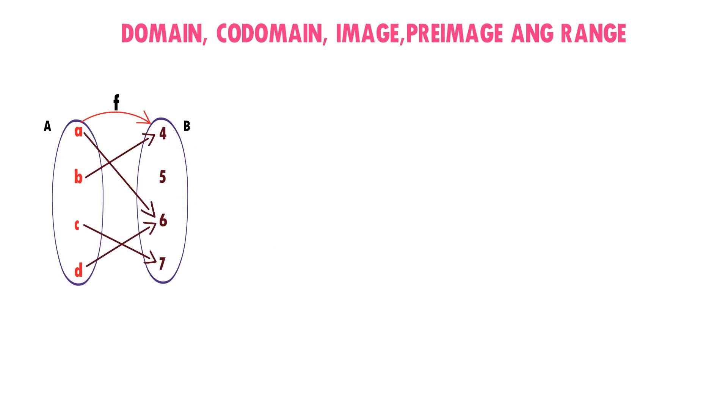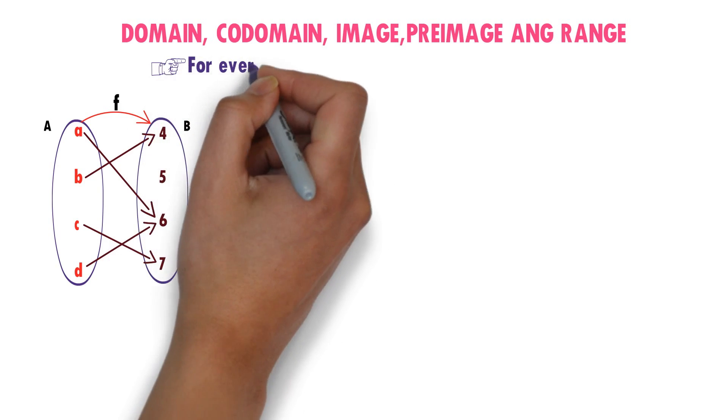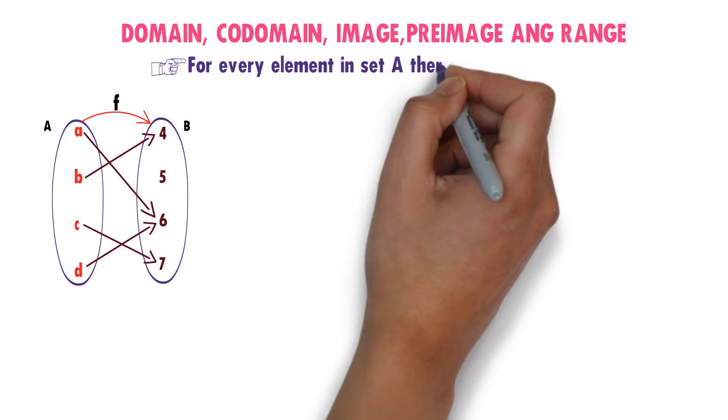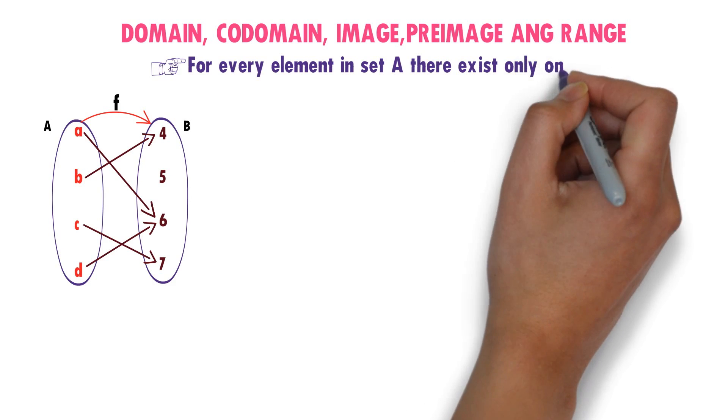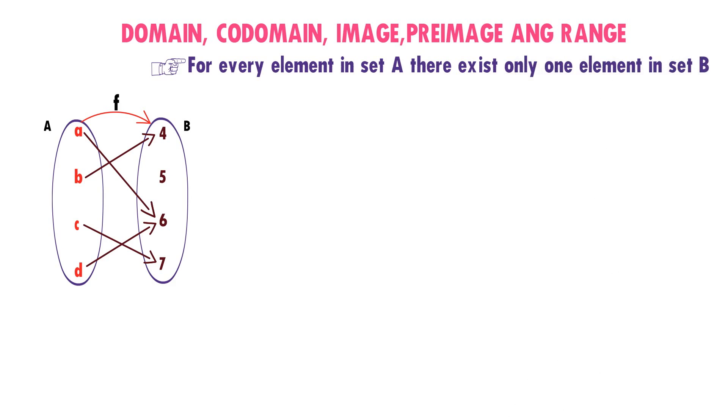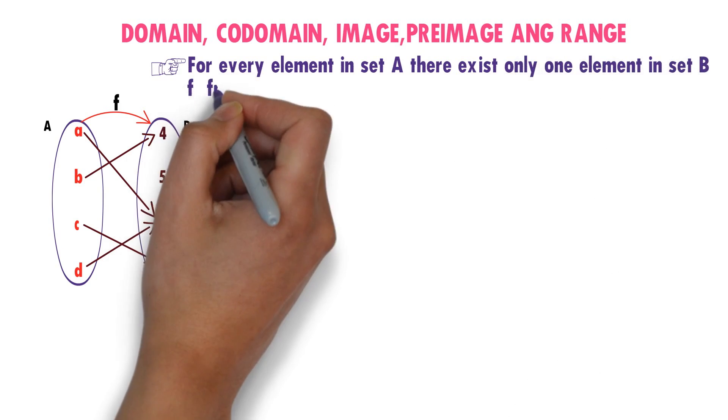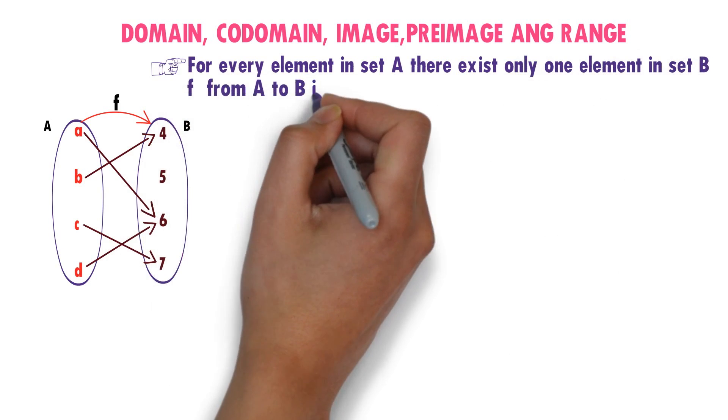You observe set A. Every element in set A is used. It is used only once. It means for every element in set A, there exists only one element in set B. Therefore, F from A to B is a function.